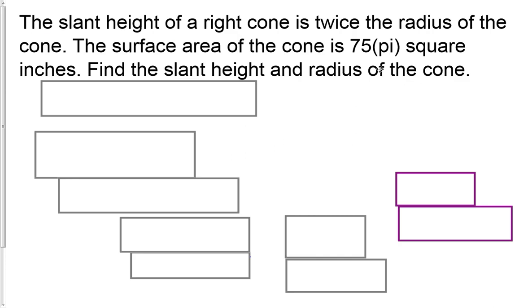Lastly, we've got a slant height problem where given that the slant height is twice the radius of the cone, the surface area is 75 pi square inches, find the slant height and radius of the cone. So they gave us 75 pi so we don't have to worry about getting some weird decimal answer or rounding. L equals 2r, that's the main thing I'm pulling out here. This is your general formula: pi r squared plus pi r L equals surface area is 75 pi.